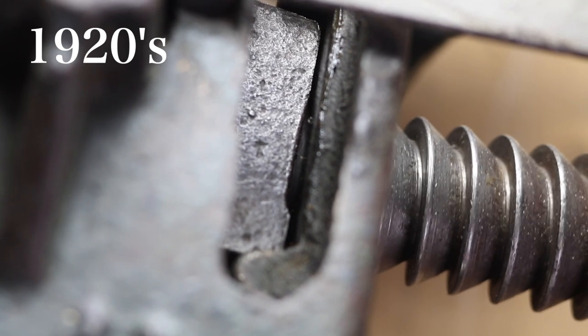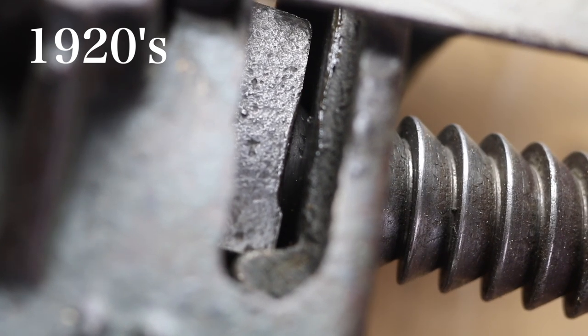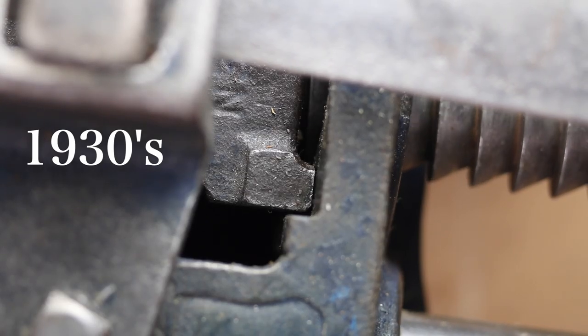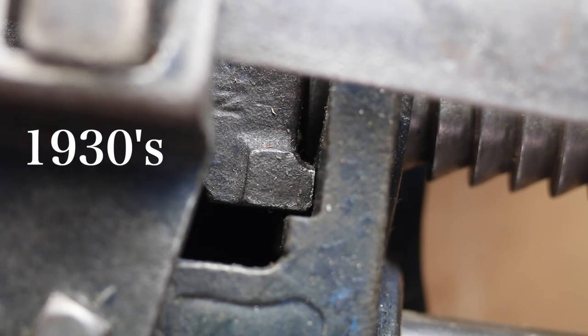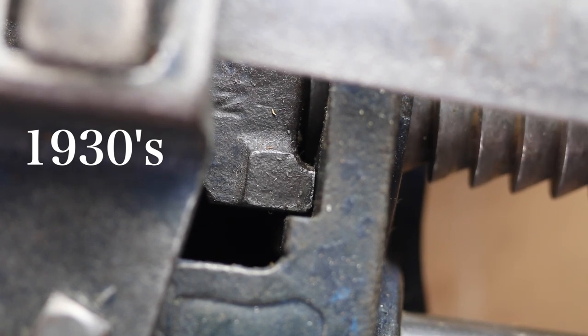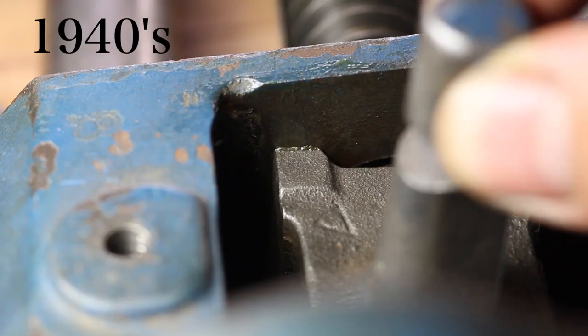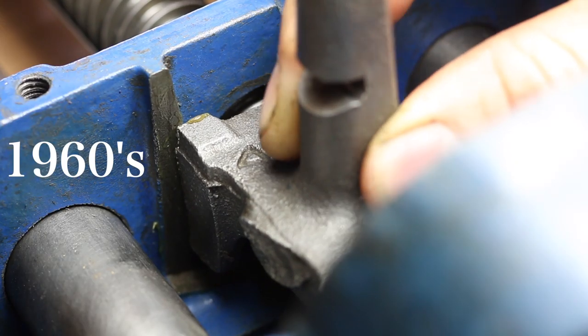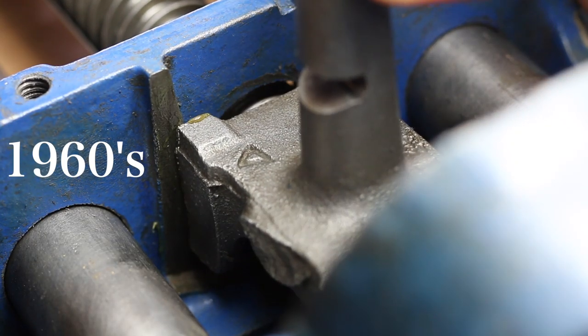I notice that in the 1920s version there is a lot of play in the thread nut. There is almost zero play in the 1930s version and this definitely matters when you're trying to clamp with one hand. Similarly, there is very little play in both the 1940s and 1960s versions. Although this might seem like a minor detail, it is definitely worthy of a star.